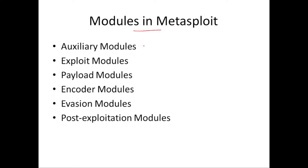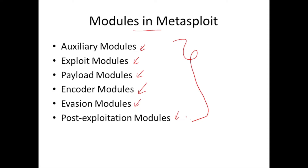The modules we have are: auxiliary modules, exploit modules, payload modules, encoder modules, evasion modules, and post-exploitation modules. We'll be having a brief look at all these modules — what their functionalities are and why we use them in Metasploit. In the next class we'll be taking a look at the various commands associated with the auxiliary modules.